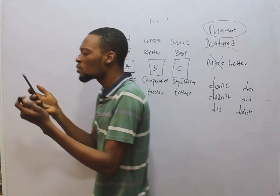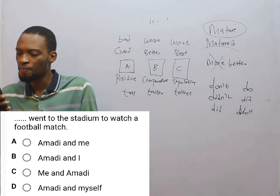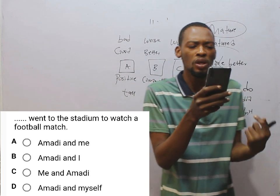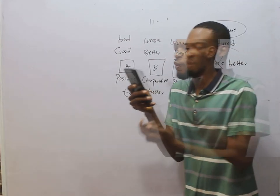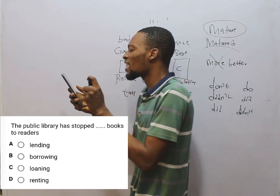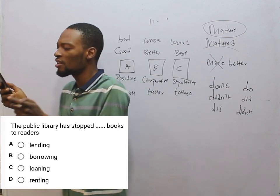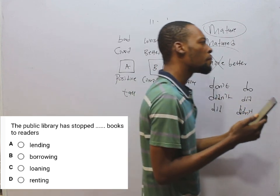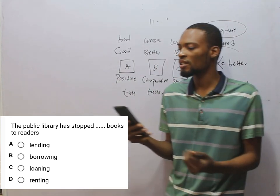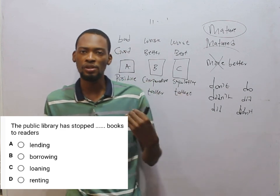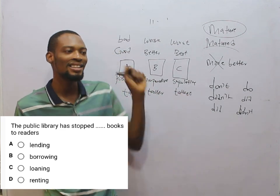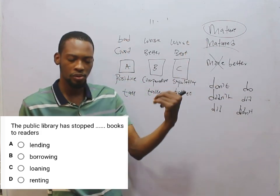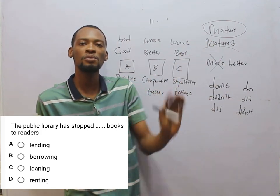Dash went to the stadium to watch a football match — Amadie and I went to the football stadium to watch the match. The public library has stopped dash books to readers — they have stopped lending books to readers. Lending is the best option, in the sense that you go to the library to borrow books, while the library on the other hand lends you the book. So they lend, you borrow — the library has stopped lending books to readers.